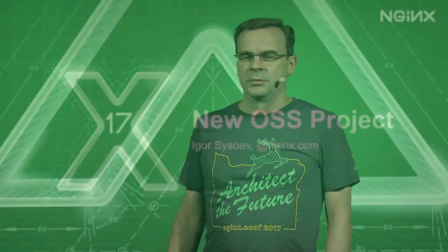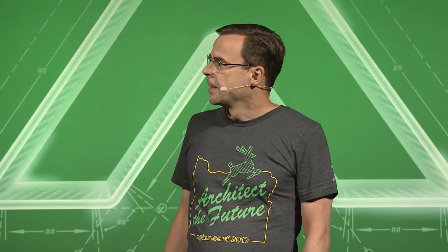Good morning. My name is Igor Sysoev. I'm the original author of NGINX, co-founder of the NGINX company, and architect of our new project, Unit. Here is the architectural scheme of Unit. All parts of this scheme are separate processes in one system. The processes are separated for security reasons. Only the main process can run as root; others can be run as non-privileged users. The architecture is quite complex, so I will elaborate on the most important parts.